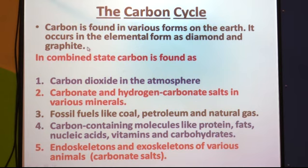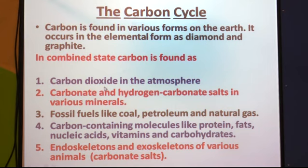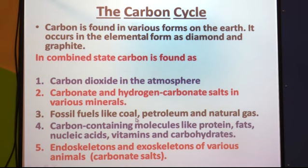Similarly, there is one more allotropic form — fullerene, also called Buckminster fullerene. In combined state, carbon is found as carbon dioxide in the atmosphere. Carbon dioxide is one of the important gases present in air, which is a mixture of gases like nitrogen and oxygen. Carbonate and hydrogen carbonate salts are found in different minerals. Different fossil fuels like coal, petroleum, and natural gas also have carbon as one of their important constituents.